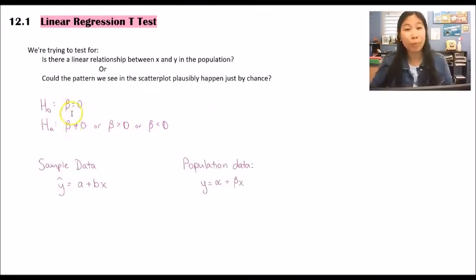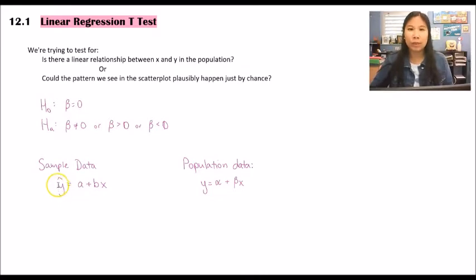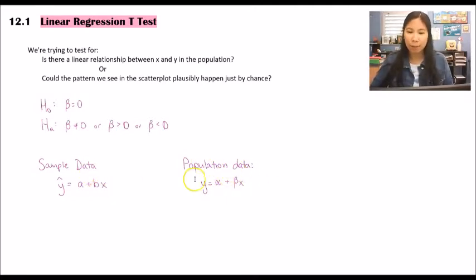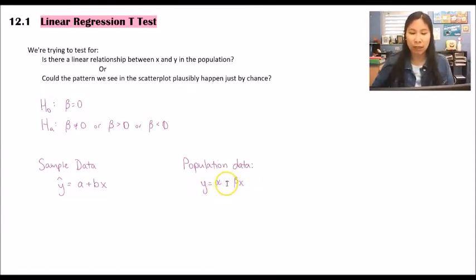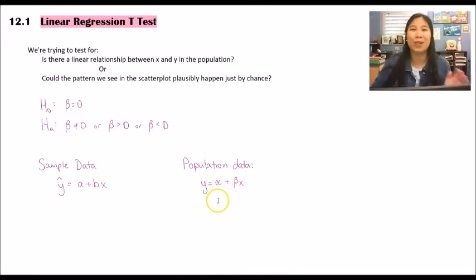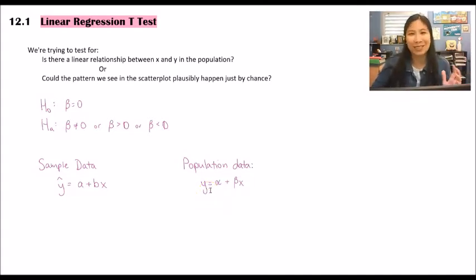In our hypotheses we use beta as the symbol for the population slope. For sample data, when we first looked at two variables and made the least squares regression line, we used y-hat equals a plus bx, where a is the y-intercept, b is the slope, and x is the x variable. For population data, it becomes y equals alpha plus beta times x, where alpha and beta are the population y-intercept and slope. Note: this alpha is not the same as our significance level alpha — those are two different alphas.